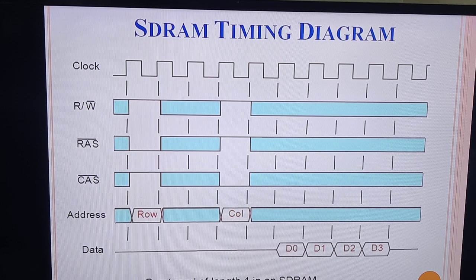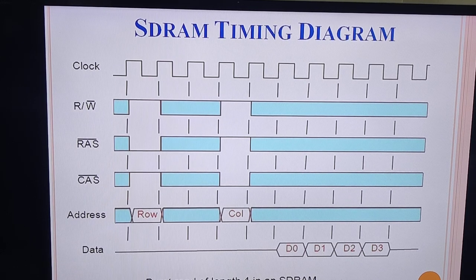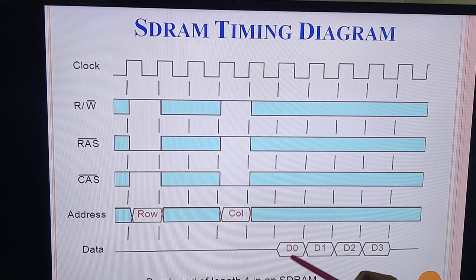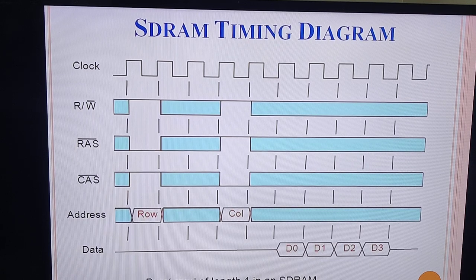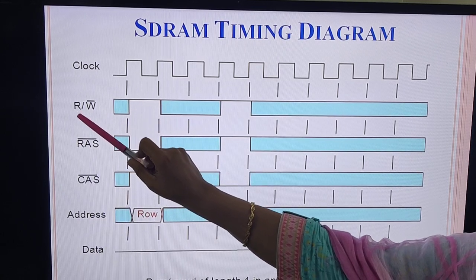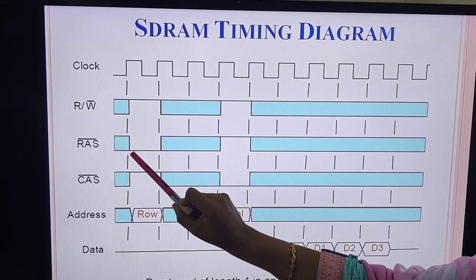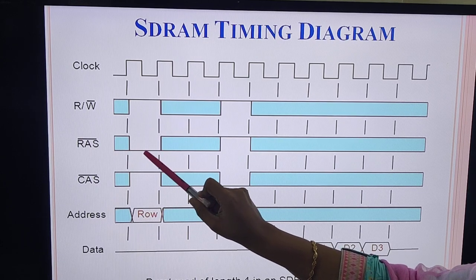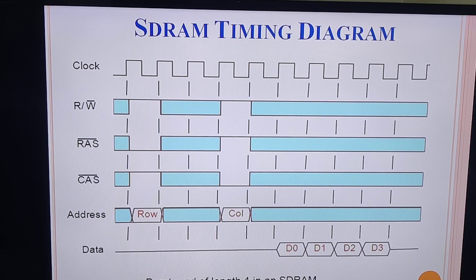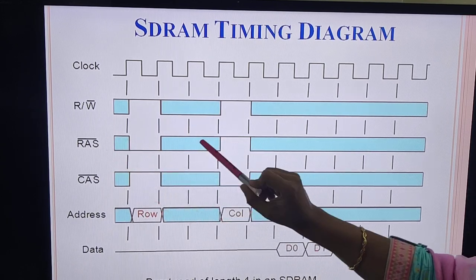Now let's look at the SDRAM timing diagram for a burst read of length 4 — meaning we are going to continuously read 4 bytes of data stored in successive column locations within a row. The read signal is high. Upon asserting the RAS signal, which is an active low signal, the row address is latched into the row address latch. It takes two memory cycles to store the particular row address in the row address latch.